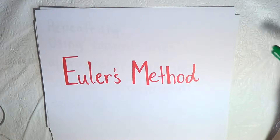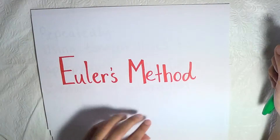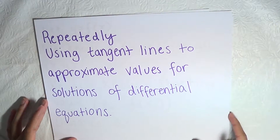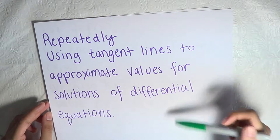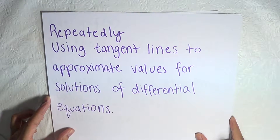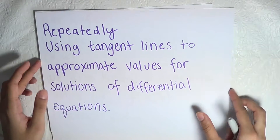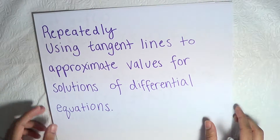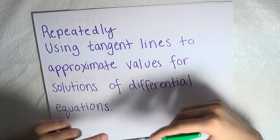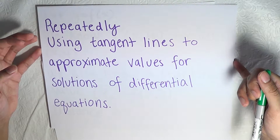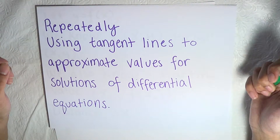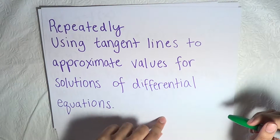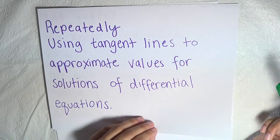Hello, today we'll be talking about Euler's Method. The definition of Euler's Method is repeatedly using tangent lines to approximate values for solutions of differential equations. Basically, Euler's Method in more basic terms is a tool that we use in calculus to approximate values for solutions and differential equations. Before you might have used tangent line approximation, but this is for more complex questions and problems that you will be given in calculus.